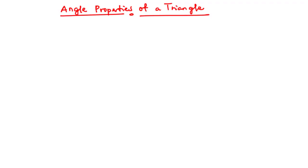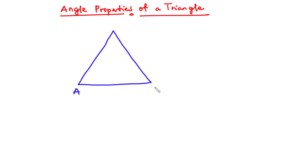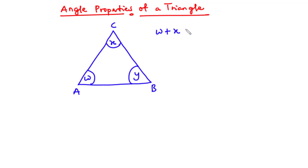In today's video we are going to focus on the angle properties of a triangle. Consider triangle ABC, which has interior angles W, X, and Y. We all know that the sum of interior angles of a triangle is 180 degrees, therefore W plus X plus Y equals 180 degrees. Let's call this equation 1.